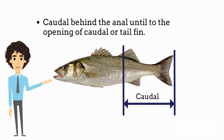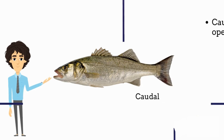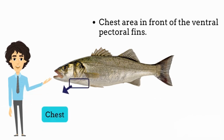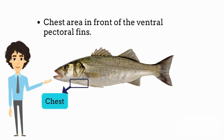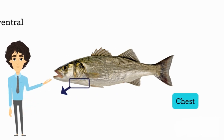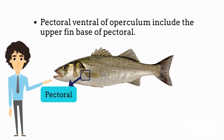Caudal: behind the anal, until the opening of the caudal or tail fin. Chest: the area in front of the ventral pectoral fins. Pectoral: ventral of the operculum, including the upper fin base of the pectoral.